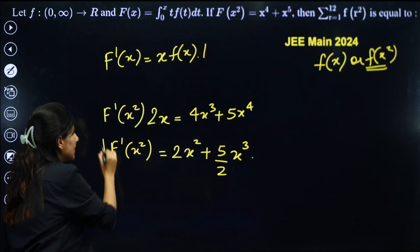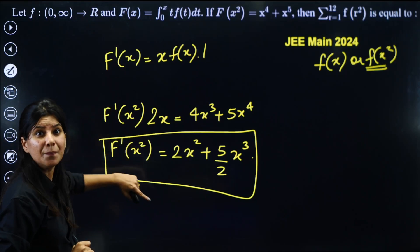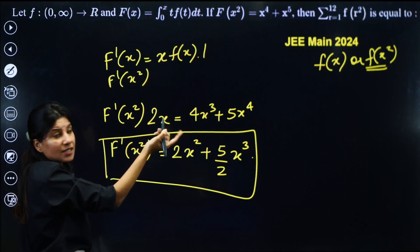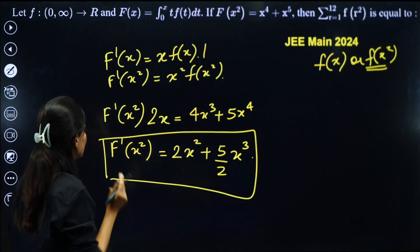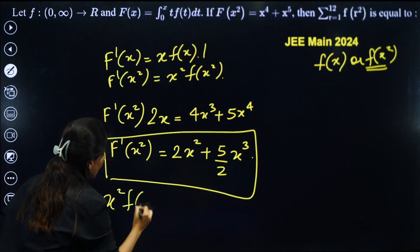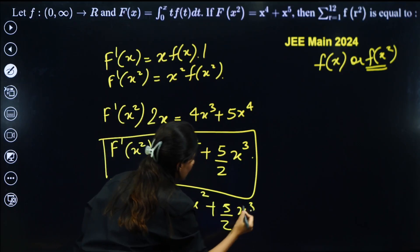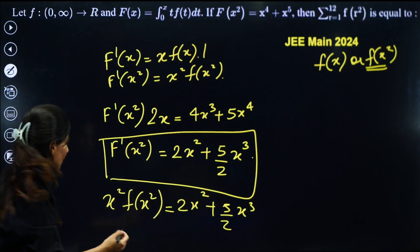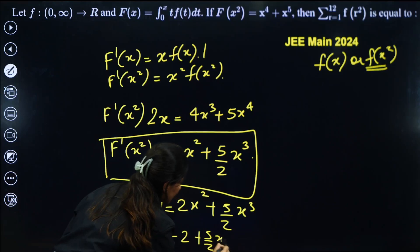Now f'(x)^2 is coming like this. Can I calculate f'(x)^2 from here and compare it? So this will be f'(x)^2. I'm replacing it by x^2·f(x)^2. So this f'(x)^2 can be replaced by x^2·f(x)^2 = 2x^2 + 5/2·x^3. It is very easy now. We've got our f(x)^2. The question is done. So f(x)^2 is clearly 2 + 5/2·x.